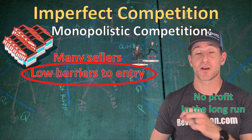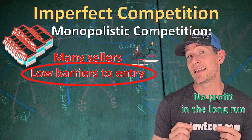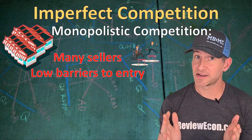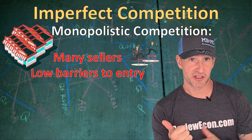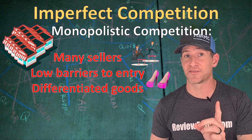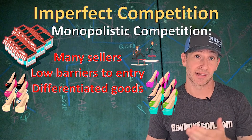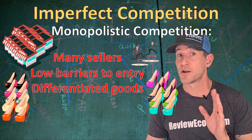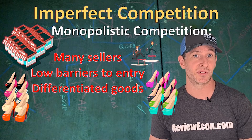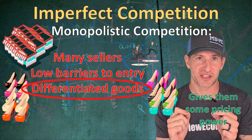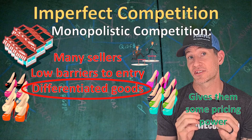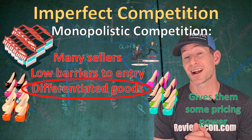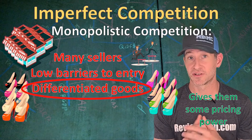And when there are economic losses, firms are going to exit the market. As a result, firms are going to break even — earn zero economic profit, or a normal profit, in the long run. The distinguishing factor between monopolistic competition and perfect competition is that products are different rather than identical. Shoes are an example of a monopolistically competitive market. Products are differentiated but highly substitutable, and it is that differentiation that gives these firms some pricing power. That means they aren't price takers like perfectly competitive firms — they are price seekers and have some influence on the price they charge.